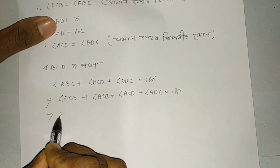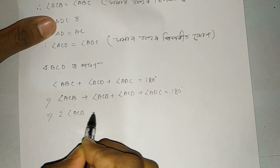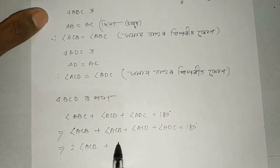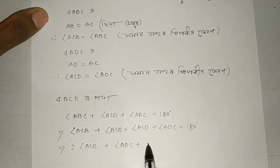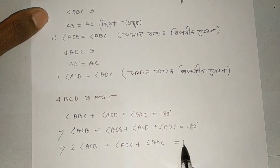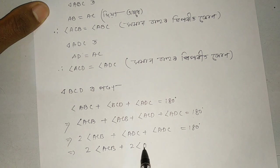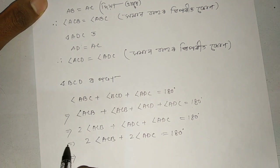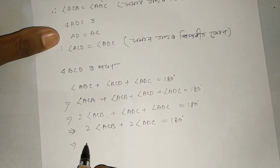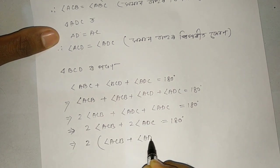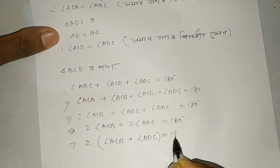ACB plus ACB — I will write 2 angle ACB plus ACD equals ADC plus angle ADC. That means 180 degrees. So 2 of angle ACB plus angle ADC equals 180 degrees. Therefore, angle ACB plus angle ADC equals 90 degrees.